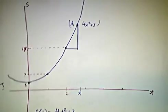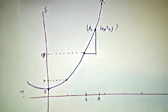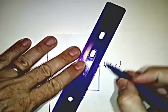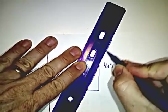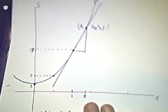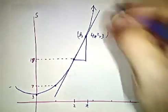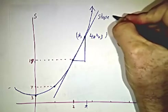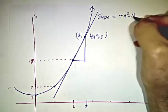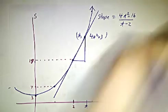And graphically, this is the slope of the line between those two points. This slope is 4t squared minus 16 over t minus 2.